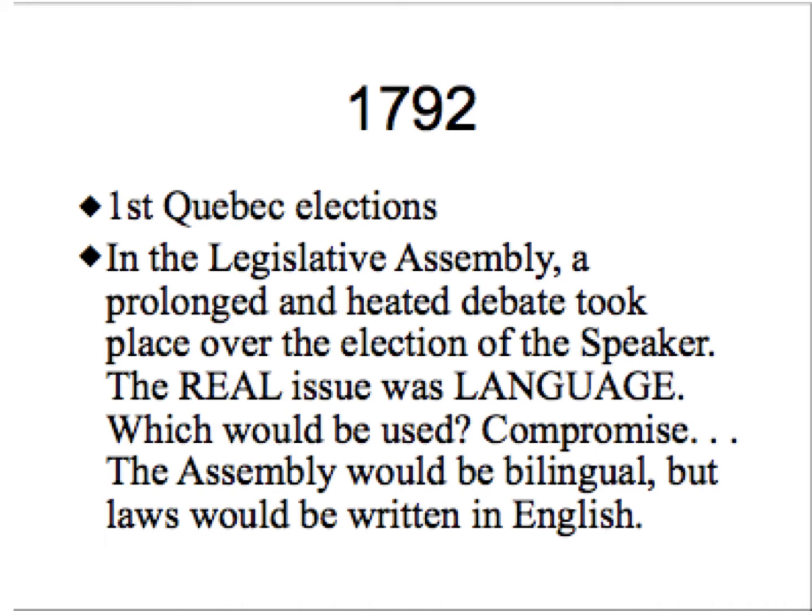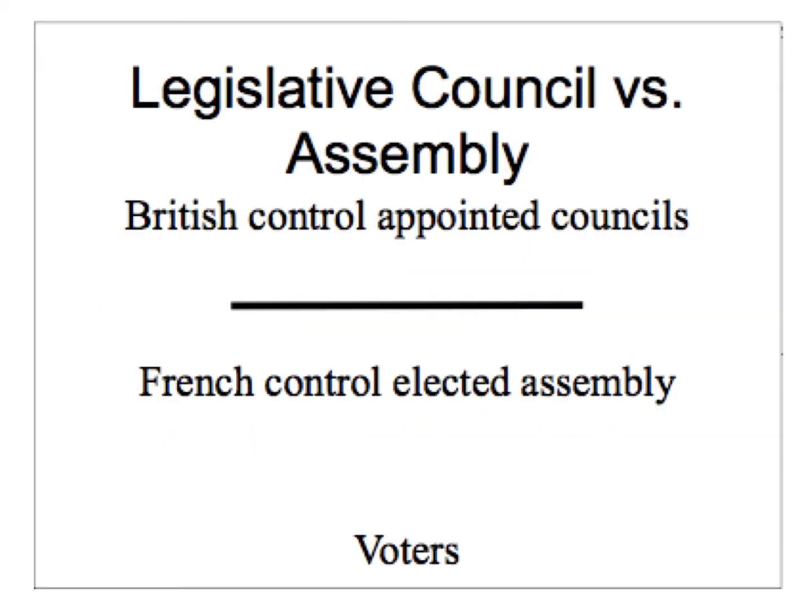The issue ultimately was language, because of the French and English. The compromise would be that the Assembly would be bilingual, with laws written down in English. It was noted that even though this was now a British territory with French-speaking people, this was the first time the French-speaking people had an election.